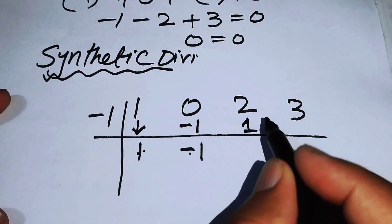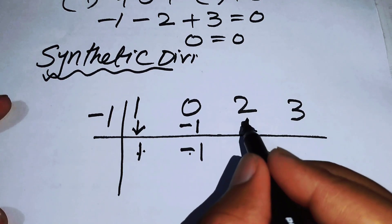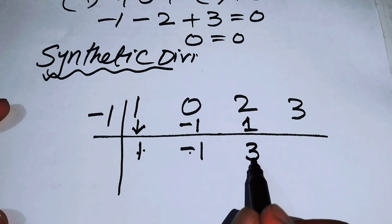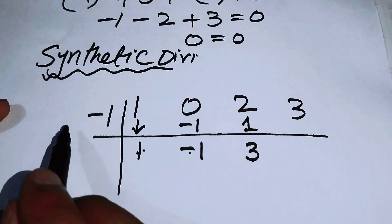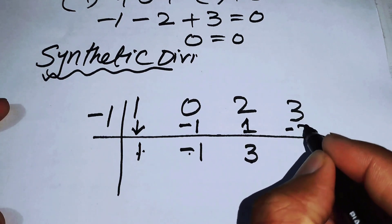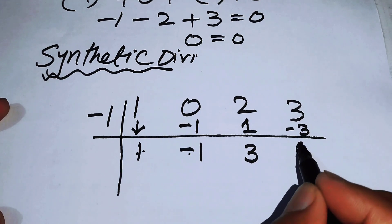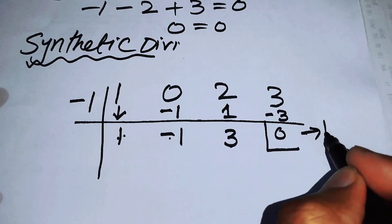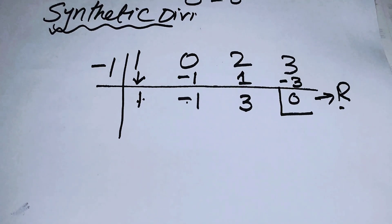We multiply minus 1 by minus 1 to get plus 1, and add: 2 plus 1 is 3. Then we multiply 3 by minus 1 to get minus 3, and add to the last coefficient: 3 plus minus 3 gives a remainder of 0. This confirms x equals minus 1 is a root.